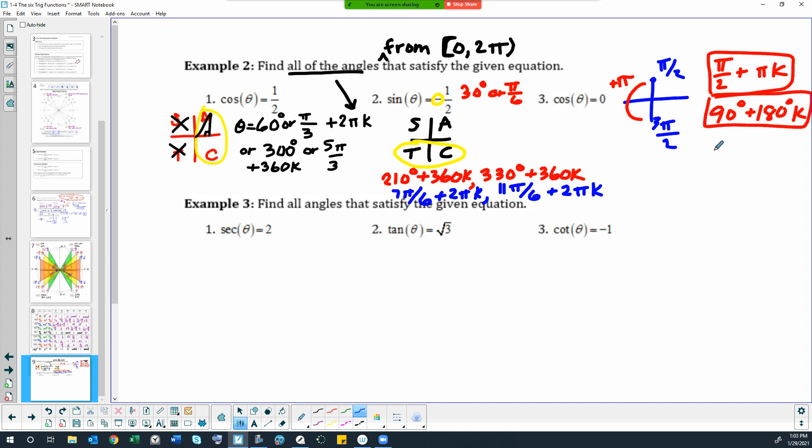Now if you had written it this way like pi halves plus two pi k and then three pi halves plus two pi k, it's not wrong. It's just that it's not necessary and it's a lot longer than just writing it this way with the pi k instead simply because it's just a shorter way to do it.